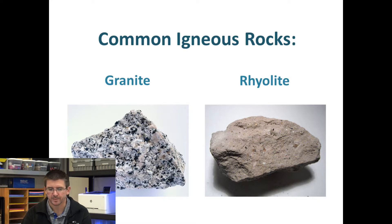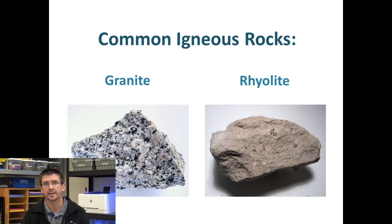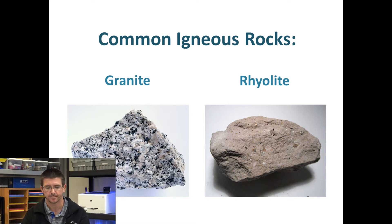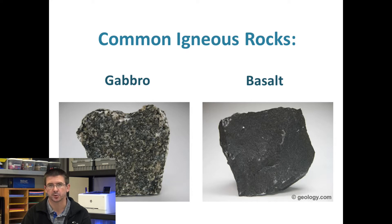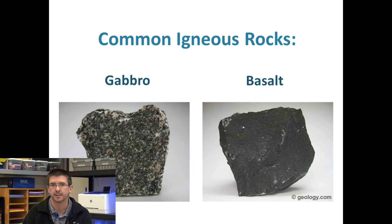Let's look at a few examples of common igneous rocks. Granite and rhyolite are two igneous rocks made from the same minerals; however, granite is formed intrusively and rhyolite is formed extrusively. Gabbro and basalt are another example of an intrusive and extrusive pair of rocks made from the same minerals. Gabbro has larger crystals, meaning it cooled slowly as an intrusive igneous rock, while basalt is the extrusive version of the same mineral combination.